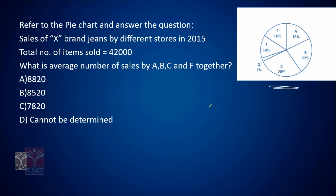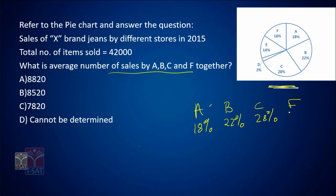The next question says: refer to the pie chart and answer the question. Sales of X brand jeans by different stores in 2015 is given. There are different stores A, B, C, D, E, F and the total number of items sold is 42,000. The question is asking what is the average number of sales done by A, B, C, and F together. A has done 18%, B has done 22%, C has done 28%, and F has done 16% of the sales. If we sum this up, the total comes to 84%.